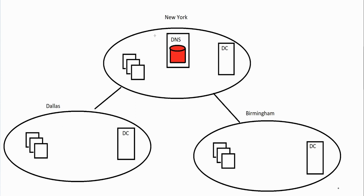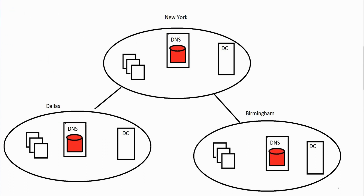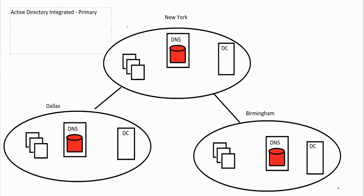Most of the time you're going to want a DNS server in each one of your locations — that's probably the most common approach. The next question that comes up is: when you have multiple DNS servers, what type of zone database should you use? There are different types: an Active Directory integrated primary, a standard primary, a standard secondary, and what's called a stub — which can be ADI or standard.